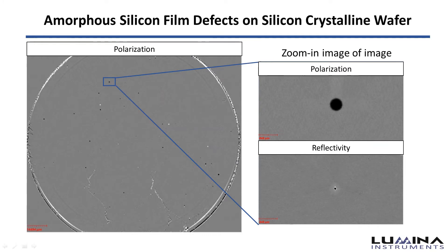Film defects are mainly detected from the polarization signal. The reflectivity image only shows the tiny particle, but the polarization image shows a much larger film defect.